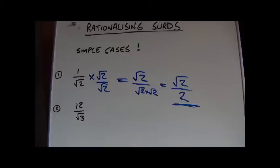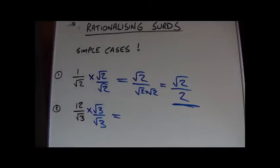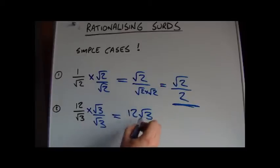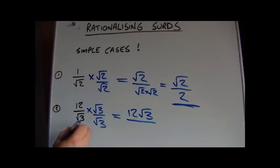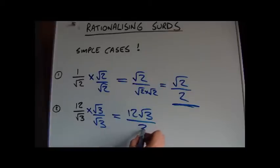We follow the same procedure for this one. We've got 12 over root 3, so we're going to multiply the top and bottom by root 3 over root 3. Again, it's like multiplying by 1 — we're not changing the numerical value, just how it looks. So on the top we're going to have 12 root 3, and on the bottom we'll have root 3 times root 3, which is root 9.